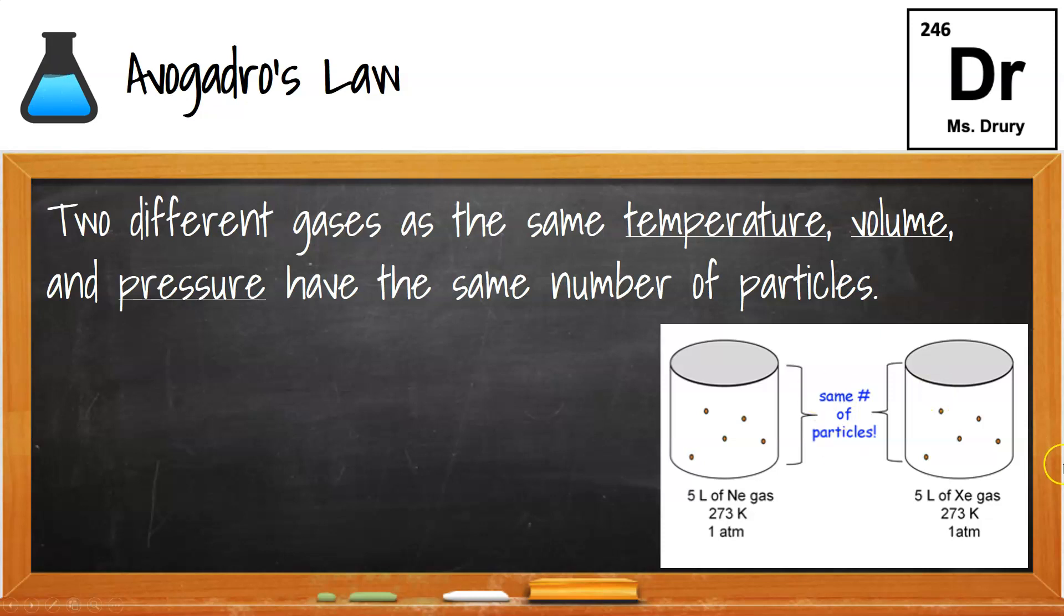So notice these are two different gases. If you don't know their symbols, Ne is neon, like in a light sign, and xenon is a completely different type of gas you wouldn't use in those signs. Notice their temperatures are both 273 Kelvin and one atmosphere in both pressures, and they're the same type of container, so the same volume, 5 liters, 5 liters.